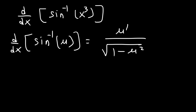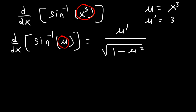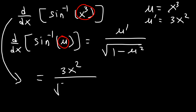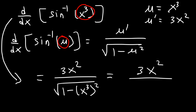All you need to do is identify u and u prime. The first part is straightforward because u is the stuff inside the arc sine function. So u is equal to x cubed. Now u prime, the derivative of u, is the derivative of x cubed, which is 3x squared. So the derivative of arc sine of x cubed is 3x squared divided by the square root of 1 minus x cubed squared, which simplifies to 3x squared divided by the square root of 1 minus x to the 6th power.